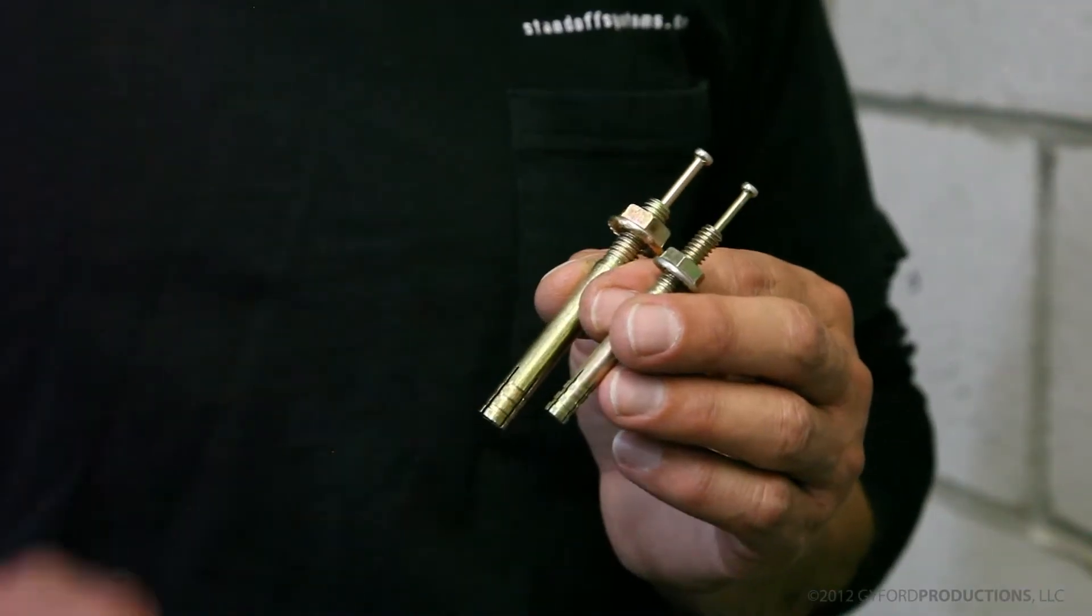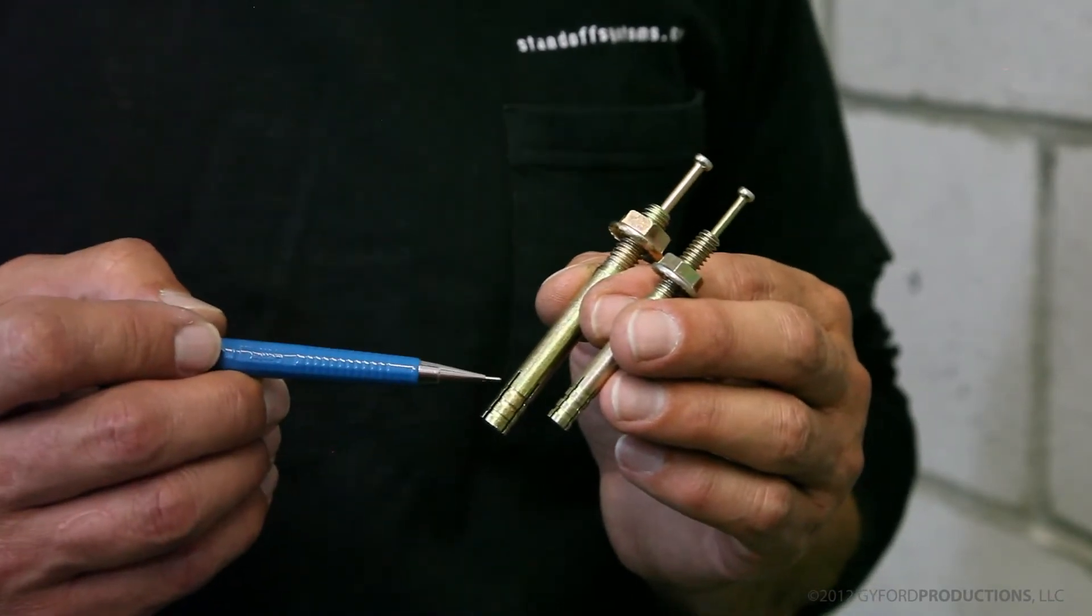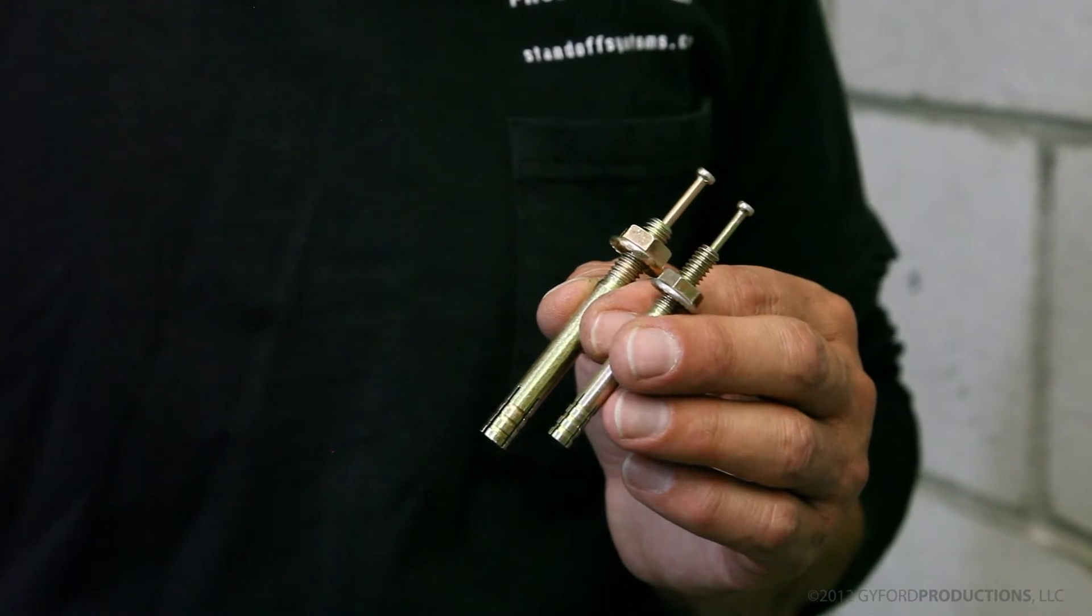For the HDCA5, you will drill a one-quarter inch hole, and for the HDCA6, you'll need to drill a five-sixteenths inch diameter hole.